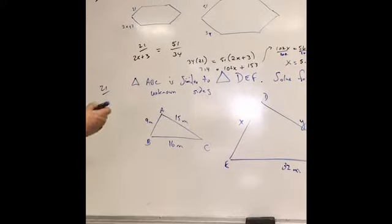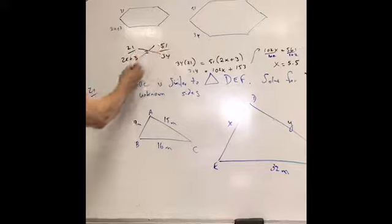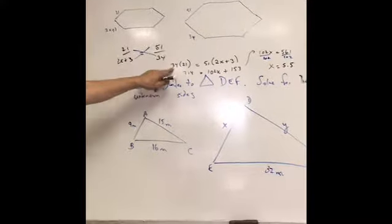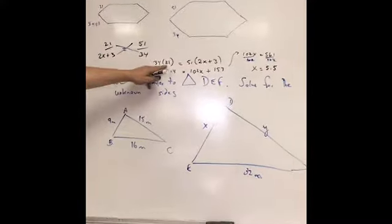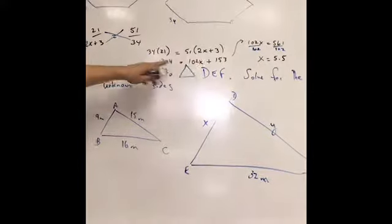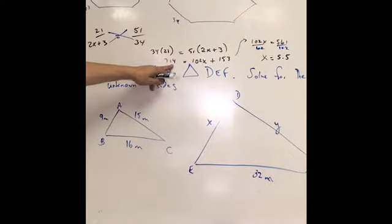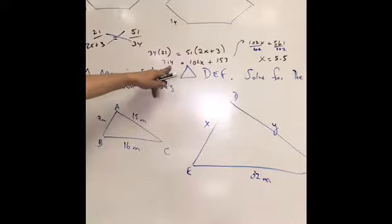Now we solve this as cross multiply. We go ahead, 21 times 34, 51 times 2X plus 3. So 21 times 34 is here. 51 times 2X plus 3. 34 times 21 is 714. Obviously, we did the calculations offline so that we could go quicker.